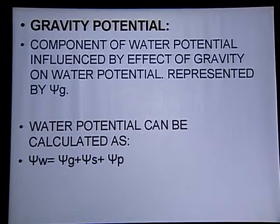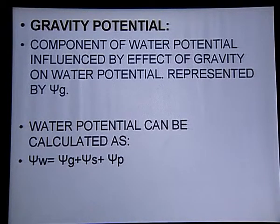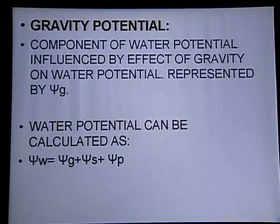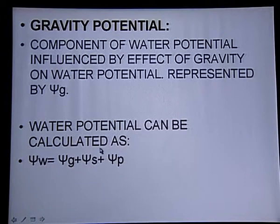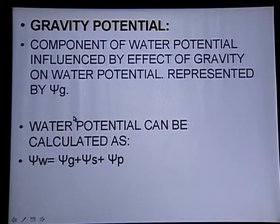That is gravity potential — the component of water potential influenced by the effect of gravity on water potential. When gravity's influence on water potential is considered, that is gravity potential, represented by Ψg (psi g). So, water potential can be calculated as the sum total: Ψw = Ψg + Ψs + Ψp — that is gravity potential plus solute potential plus pressure potential.